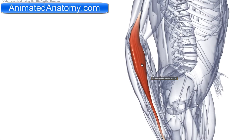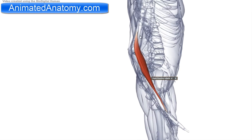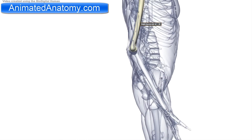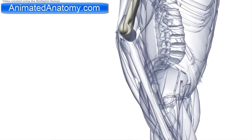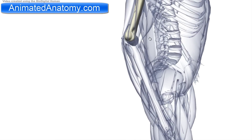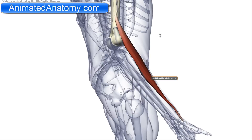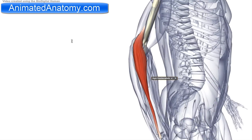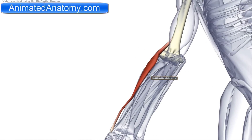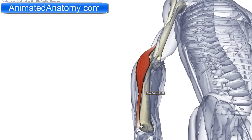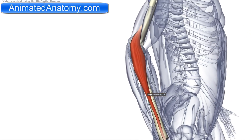The origin of this muscle is the lateral supracondylar ridge of the humerus — you can see that right here. We have the lateral epicondyle here and then the ridge above the epicondyle. From this ridge the muscle goes all the way down and inserts on the distal radius, or the radial styloid process — it inserts here on the styloid process of the radius.